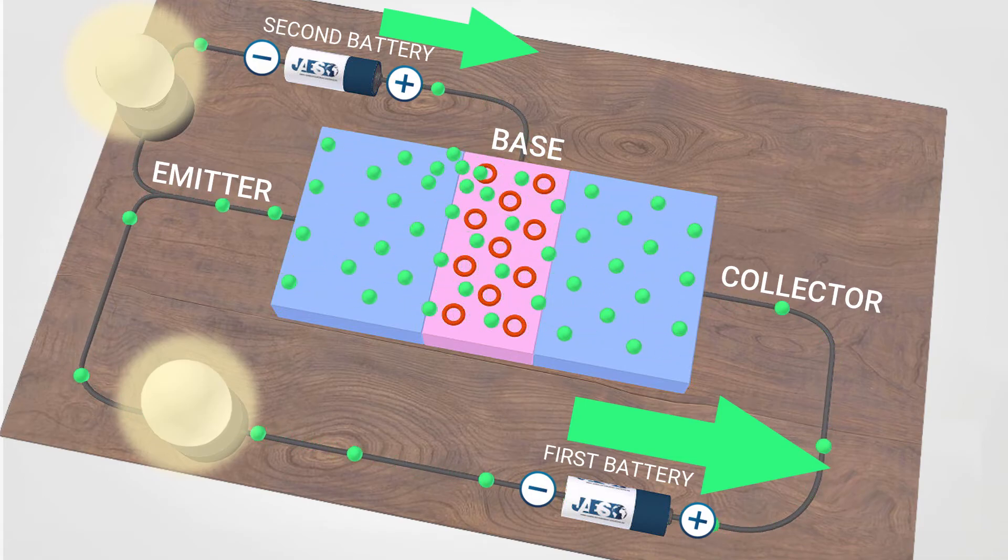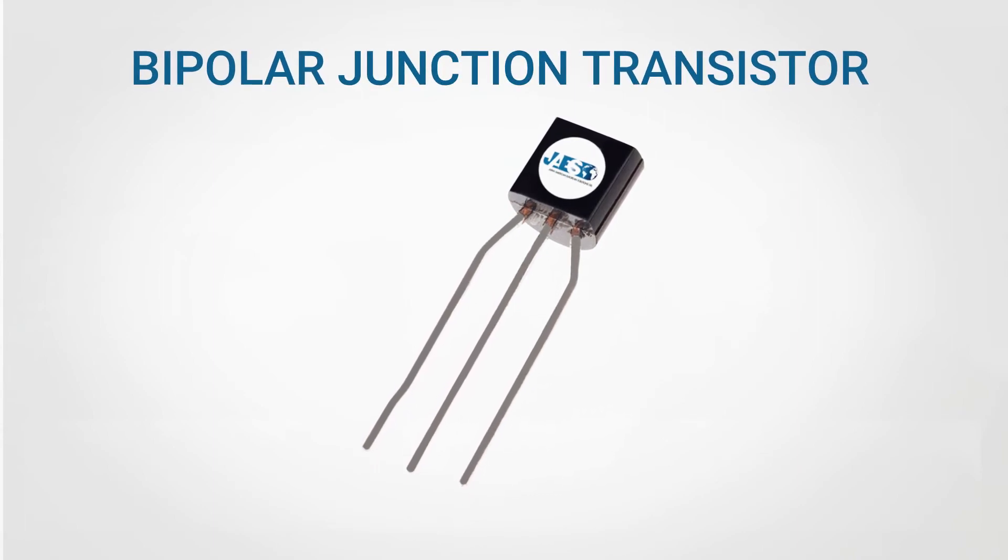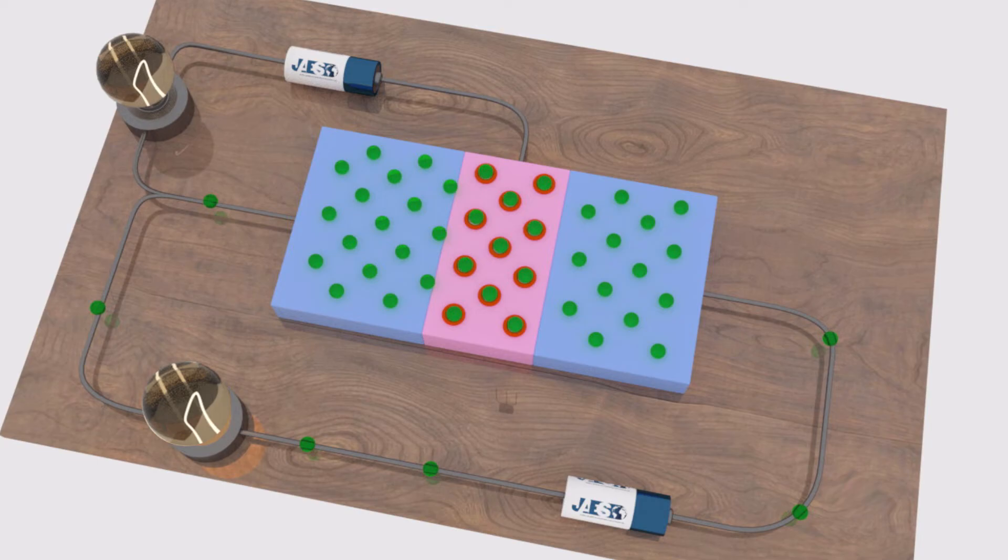The type of transistors we've talked about so far is called bipolar junction transistor. Let's try to replace this transistor with a real bipolar junction transistor.